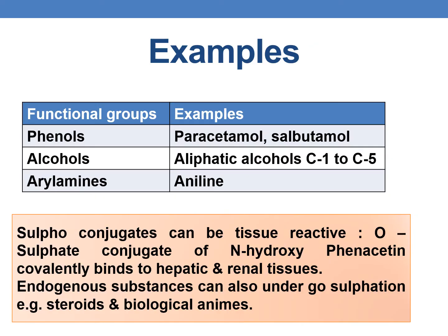Examples of drugs that undergo sulfation: phenols — examples are paracetamol and salbutamol. For alcohols, the examples are aliphatic alcohols from C1 to C5. For arylamines, the example is aniline. One important point is that sulfate conjugates can be tissue reactive, especially the O-sulfate conjugate of N-hydroxyphenacetin, which covalently binds to hepatic and renal tissues.